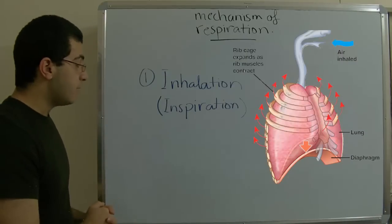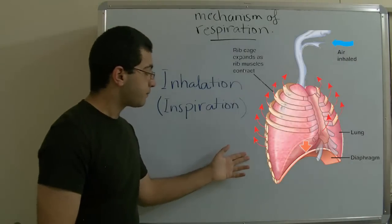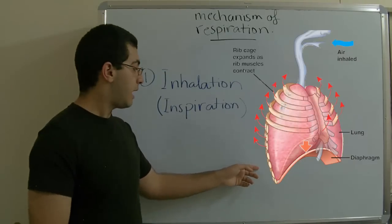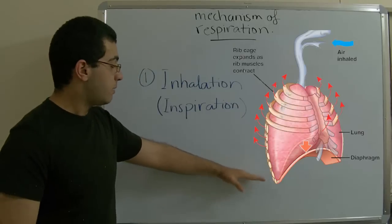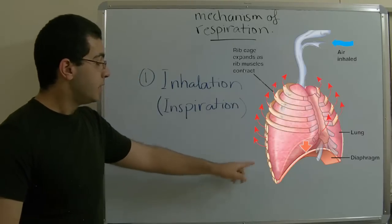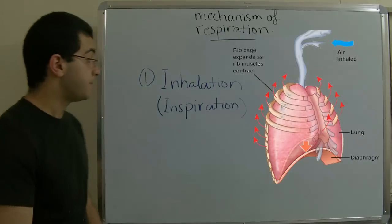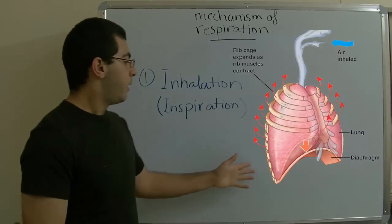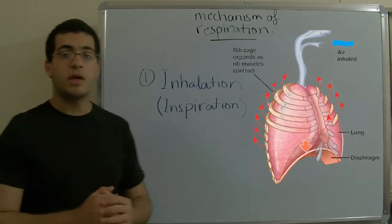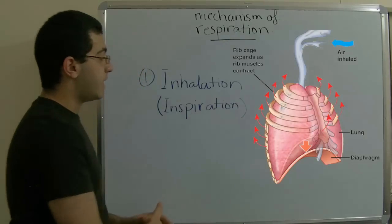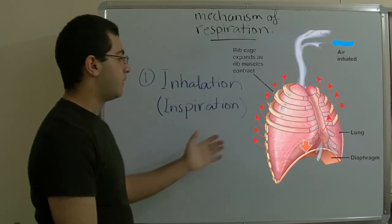And at the same time, there is a muscle which is found at the end of the rib cage, just above the abdominal cavity. This muscle is called a diaphragm and it's found in mammals. This muscle also contracts. So when it contracts, the size of the whole rib cage increases and so increasing the volume of the lungs.